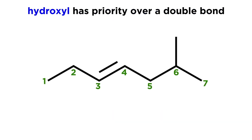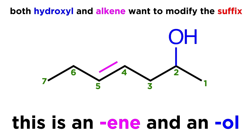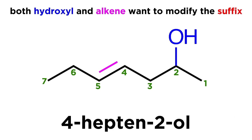One substituent that does take priority over the double bond is the hydroxyl group. If we turn this methyl into a hydroxyl, now the only thing that matters is getting the hydroxyl on the lowest numbered carbon possible. This would mean that we would now number from right to left. The tricky thing about this situation is that we now have two different functional groups that are both attempting to modify the suffix of the name — we have an '-ene' and we have an '-ol'. Both of those will have to be present in the name. The way we do it is as follows: we will say 4-hepten-2-ol.